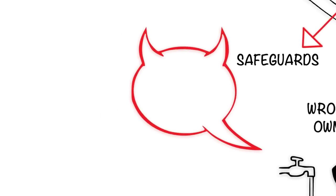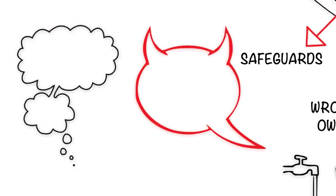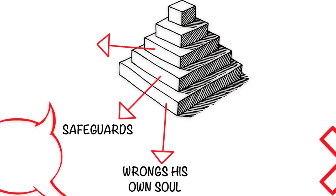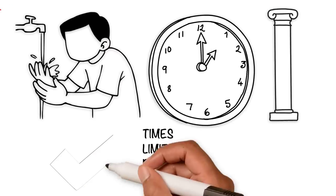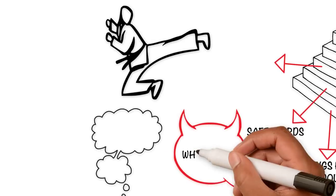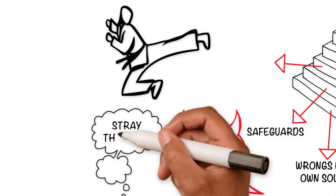The third is he who keeps the essential limits and essential pillars and inwardly strives to repel the whisperings and stray thoughts. This person is occupied with striving against the devil lest he rob him of his prayer. In prayer, he's engaged in struggle.